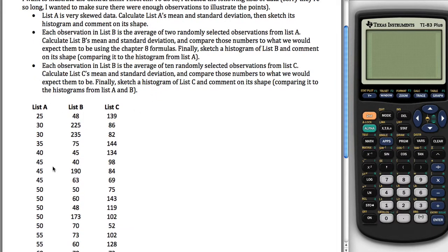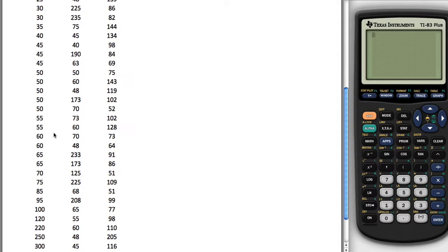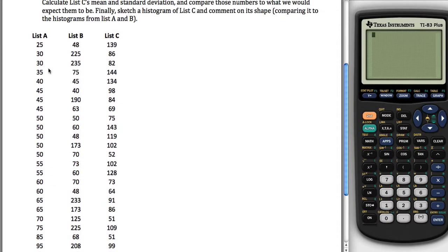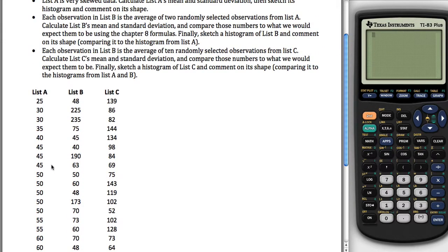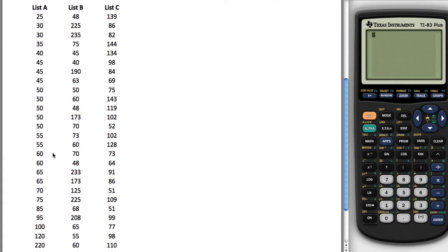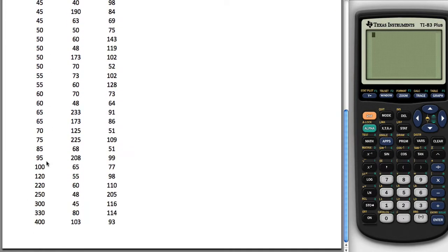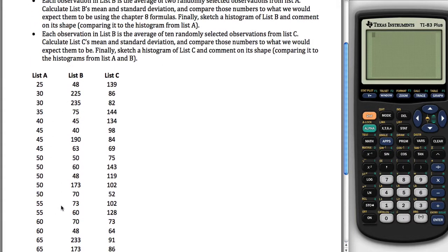So what I did is I made this big list of data in List A here, 30 observations, and I tried to make data that's very left skewed. See most of our observations down here are pretty low in the 40s, 50s, 60s, but then we got a few that are way up here, way bigger. So this is right skewed data.